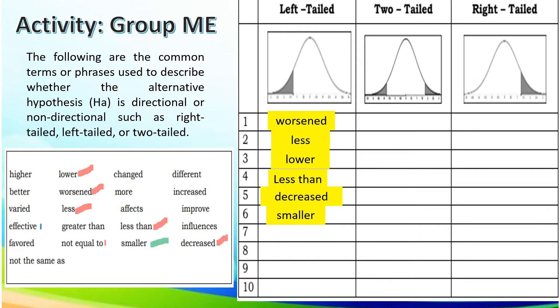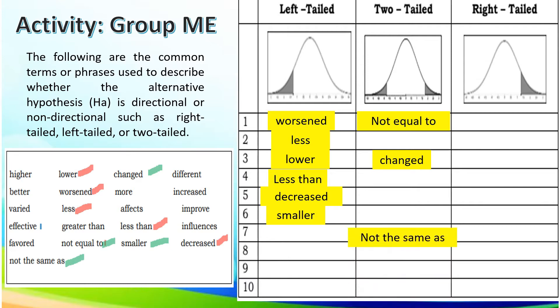The next words: not equal to, change, and not the same as all belong to two-tailed.